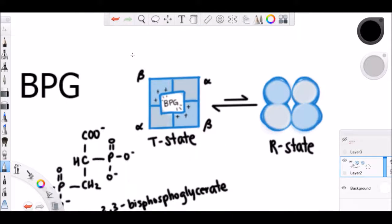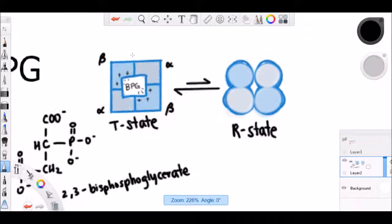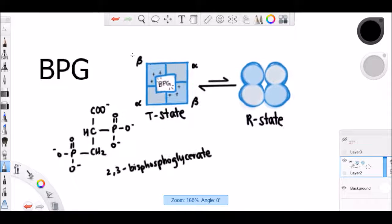We would want this preferential unloading of oxygen in conditions such as hypoxic conditions, severe anemia, and adaptations to high altitude. We'd be able to give our body more of the oxygen as the T state would be favored and the unloading of the hemoglobin would happen.